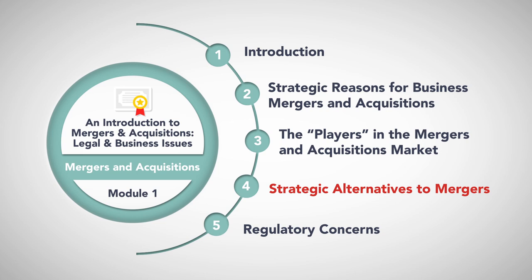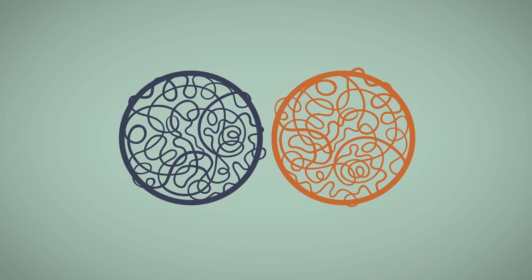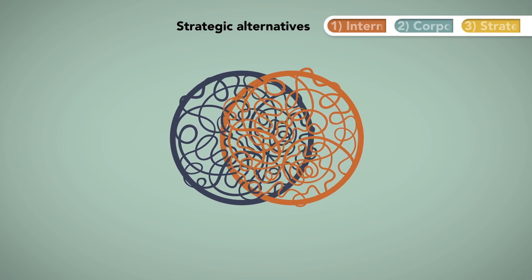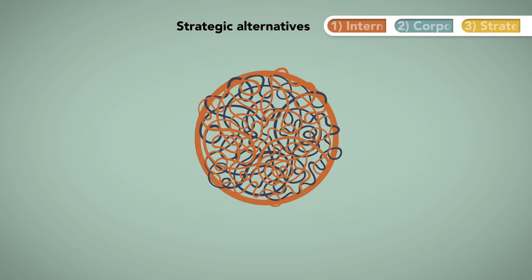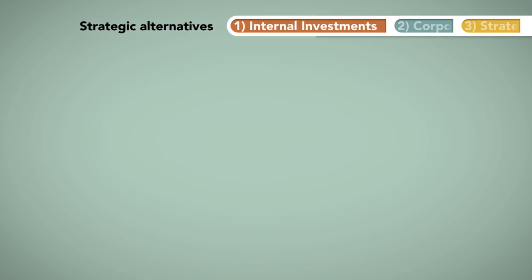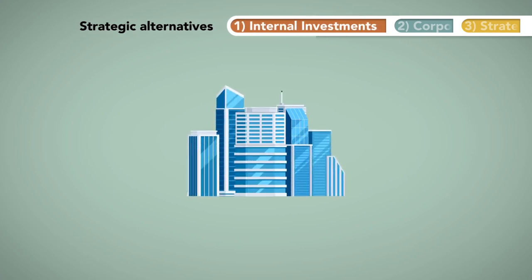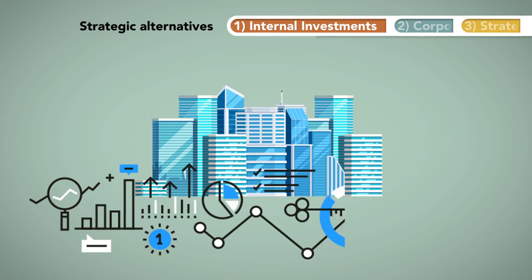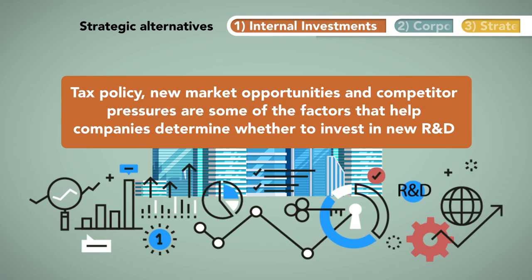Strategic alternatives to mergers. Instead of carrying out complex mergers and acquisitions, companies may choose to seek their benefits through other means. Internal investments: companies always have the option to grow via internal or organic growth by investing in research and development. Tax policy, new market opportunities, and competitor pressures are some of the factors that help companies determine whether to invest in new R&D.